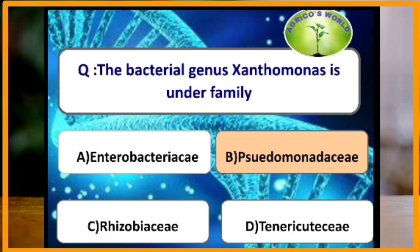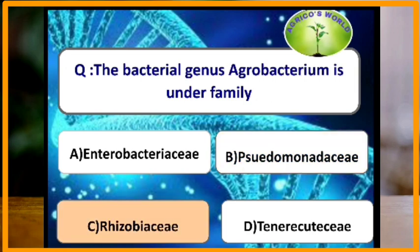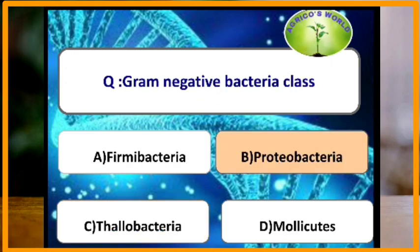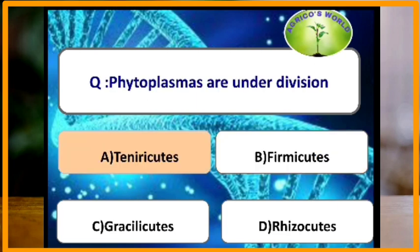The bacterial genus Xanthomonas is under the family Pseudomonadaceae. The bacterial genus Agrobacterium is under the family Rhizobiaceae. Gram-negative bacterial class is Proteobacteria. Phytoplasmas are under the division Tenericutes.